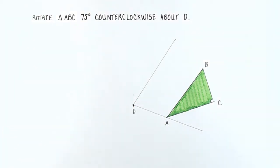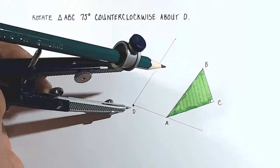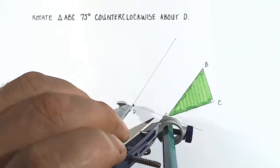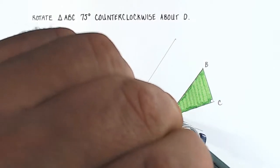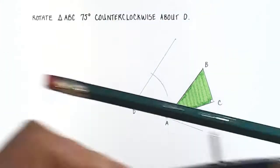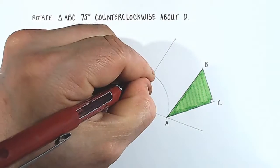So now what we do is take our compass and set the distance between the tip and the pencil from D to A, like this. Now we're going to rotate an arc passing through A and through the other leg of our angle. This point right here will be point A prime.